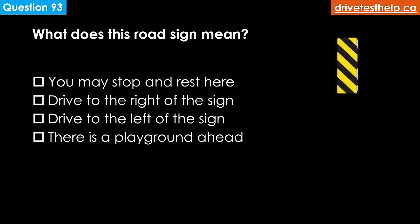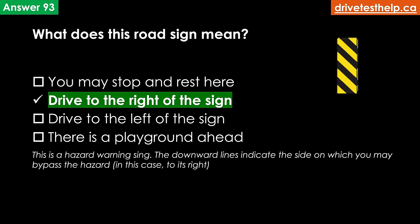What does this sign mean? Options: you may stop and rest here; drive to the right of the sign; drive to the left of the sign; there is a playground ahead. The correct answer is drive to the right of the sign. This is a hazard warning sign — the downward lines indicate the side on which you may bypass the hazard; in this case, to its right.